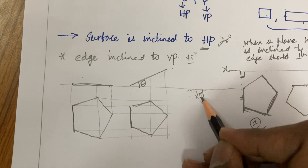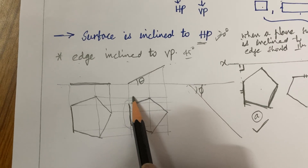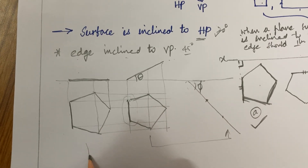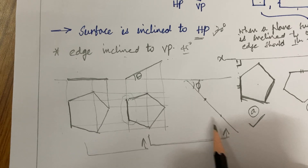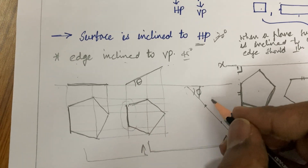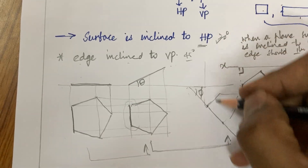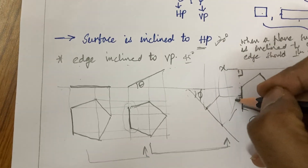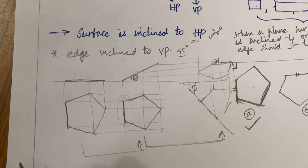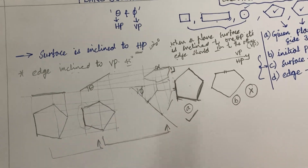The third step involves phi — the edge inclination to VP. The edge on which it is resting is inclined, so plot and measure this distance from the second step. The first step is linked with the second step, and from the second step you work out the third step. For the third step, you are not supposed to look at the first step — take measurements from the second step only, and work out the angle as per the given angle and measurement. Project this and you will get the final pentagon.